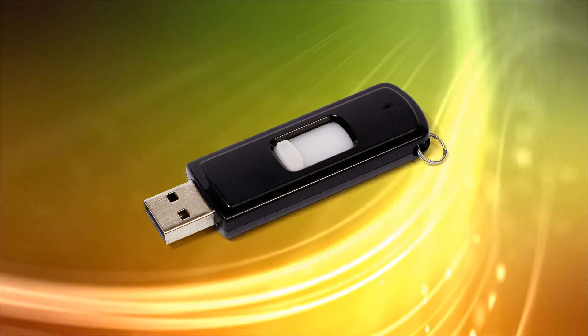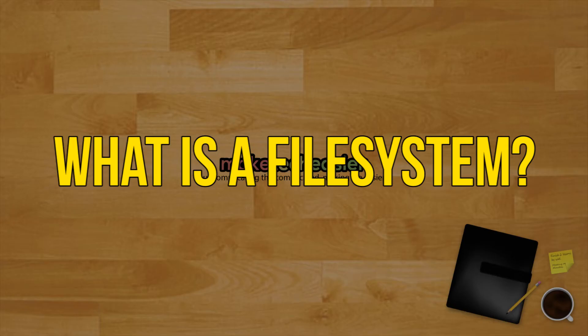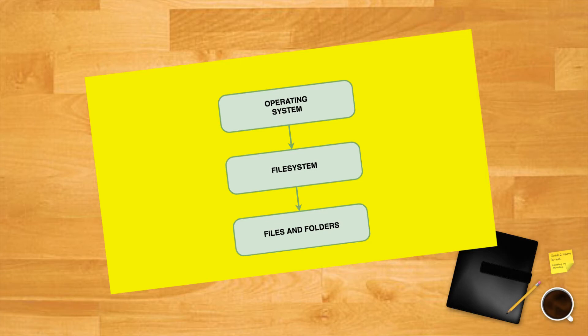Here are some of the most important considerations before choosing a file system for a USB drive. First, before we go any further, let's clarify what a file system is. A file system is a piece of software that controls how data on a media is stored and retrieved. A file system manages operations such as copying, moving and deleting files on a drive. A file system is different from an operating system in the sense that a file system runs atop an operating system and depends on it for many operations with the underlying hardware.